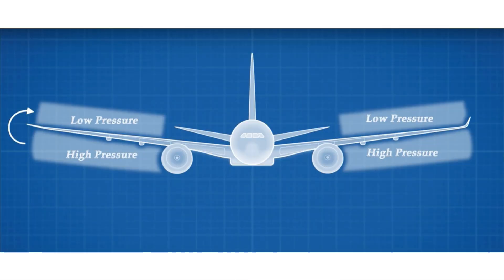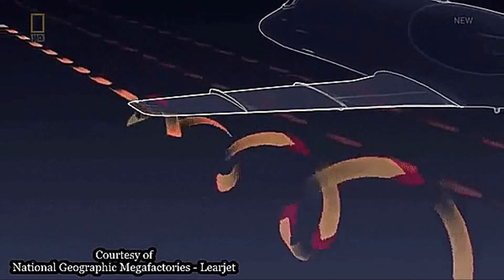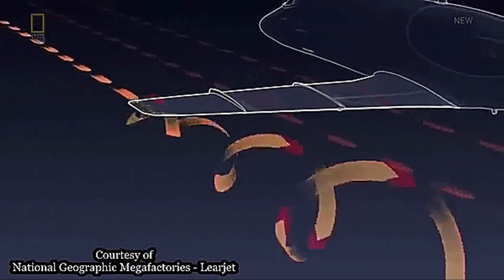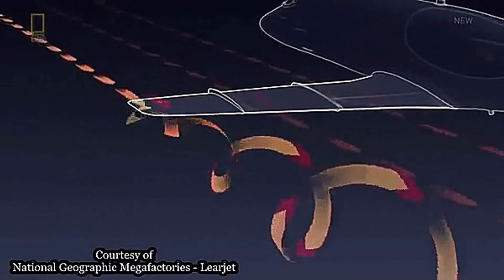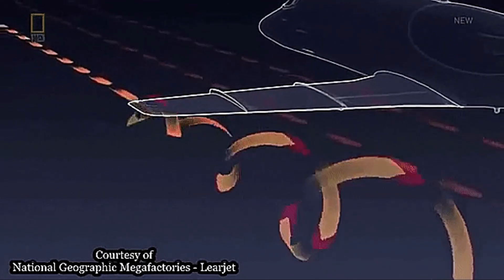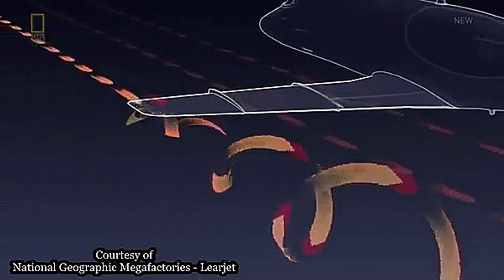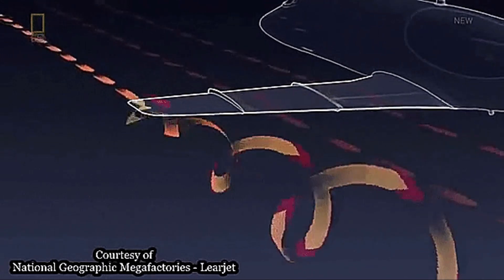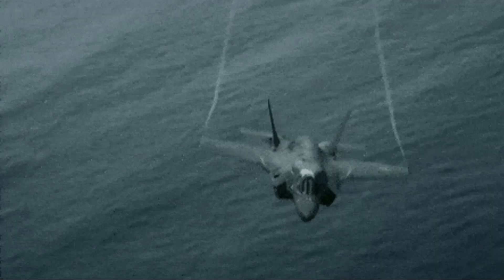Now, air moves from higher pressure to lower pressure. So the air below the wing wants to move up and mix with the air at the upper surface of the wing. As a result, the flow near the wingtips tends to curl up, flowing from the higher pressure region just underneath the tips to the low pressure region on top. This leads to the formation of wingtip vortices.